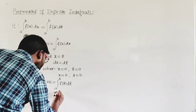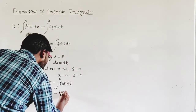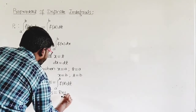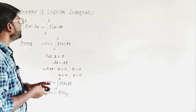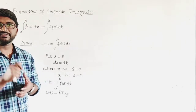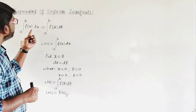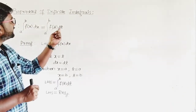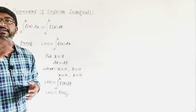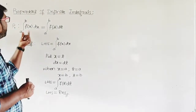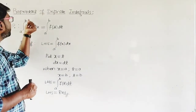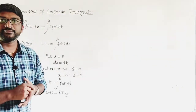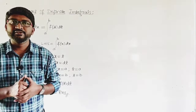We have proved the first property. The exact meaning of P0 is: the variable of integration is x on the left and t on the right. Whenever you have integral a to b of f(x) dx, it can be written as integral a to b of f(t) dt. That is what property P0 says.